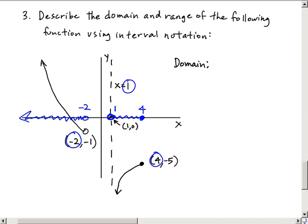And so what it does is it gets everything to the far left forever. It goes to negative 2 but doesn't include it. Then it picks up at 1 but does not include that, and then goes to 4, stopping there and including it. So the interval then for the domain would be these two intervals.